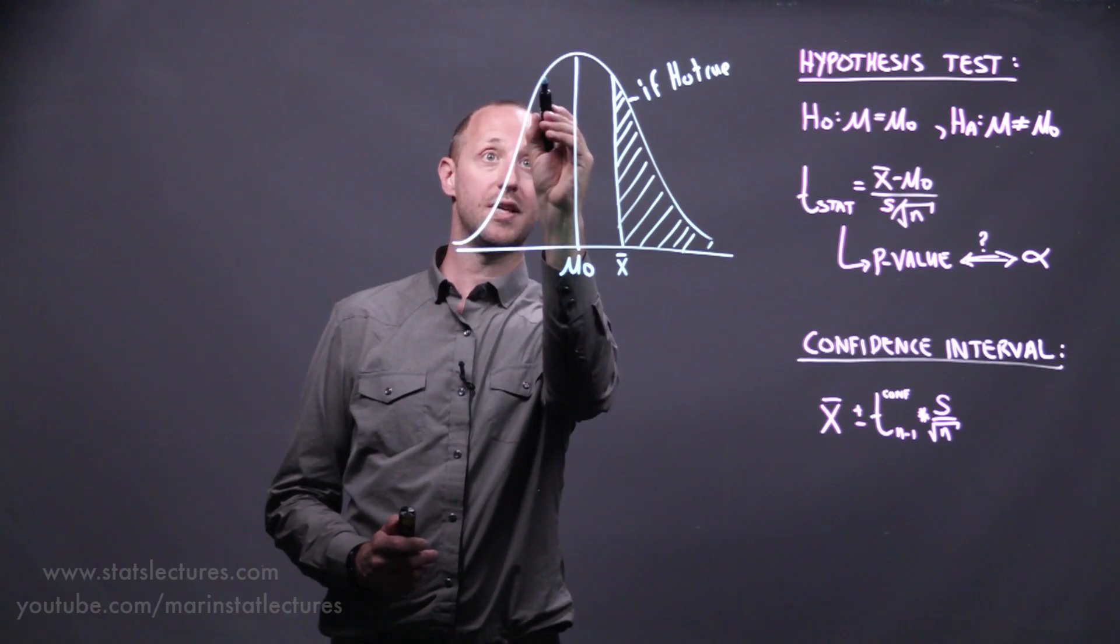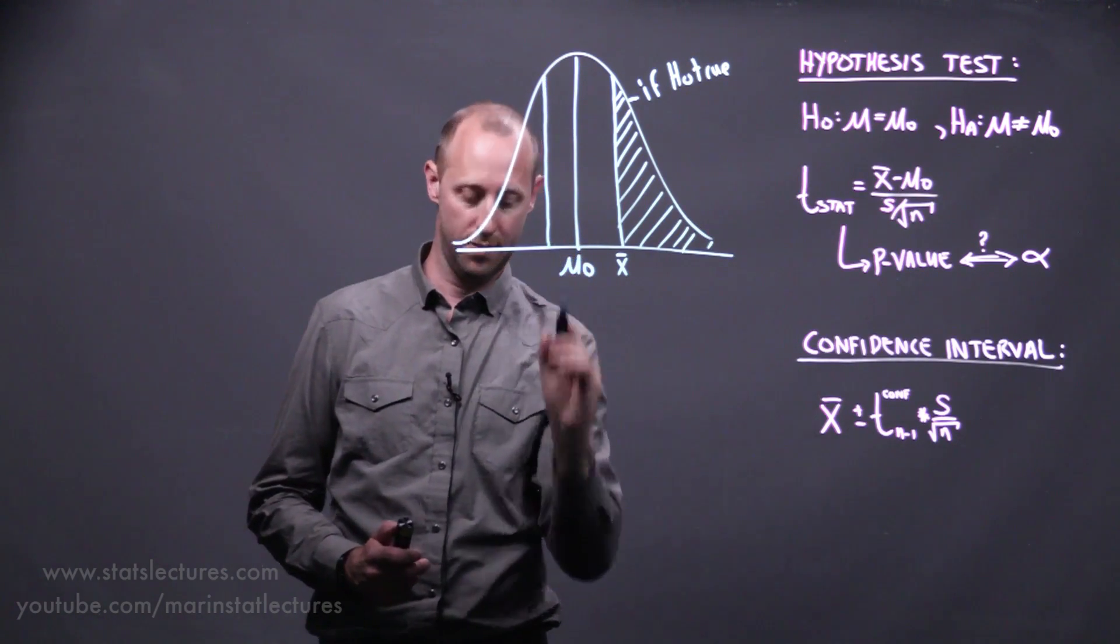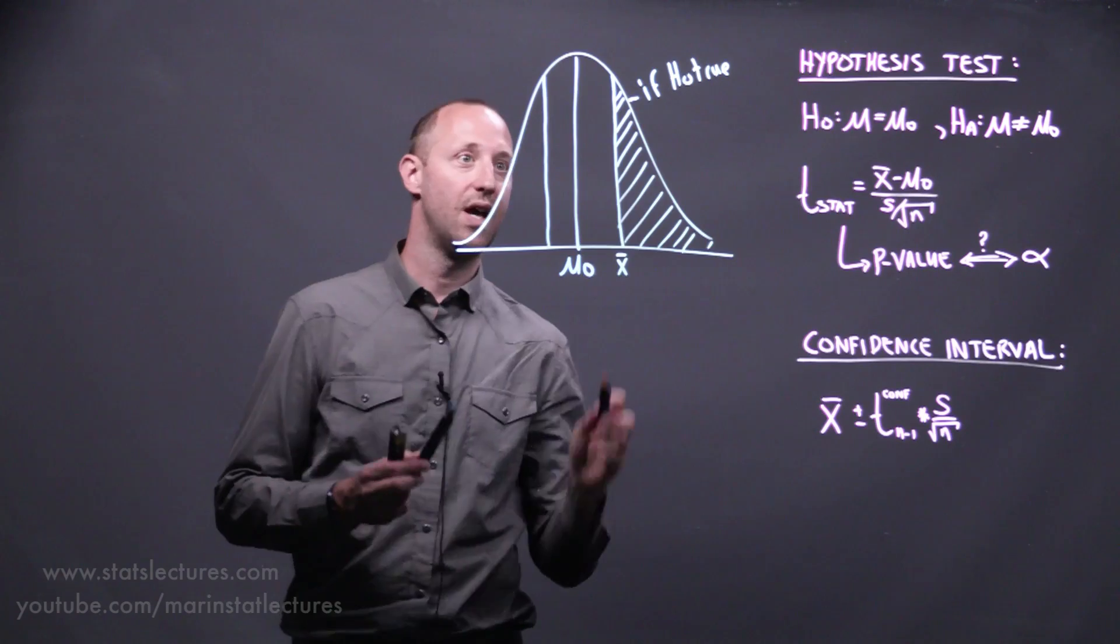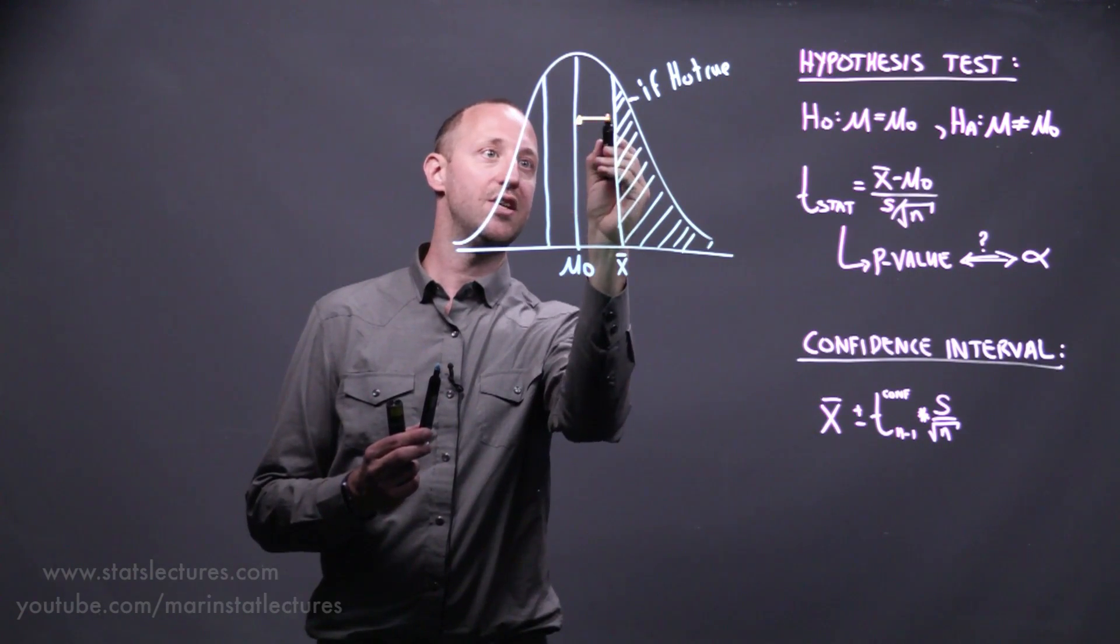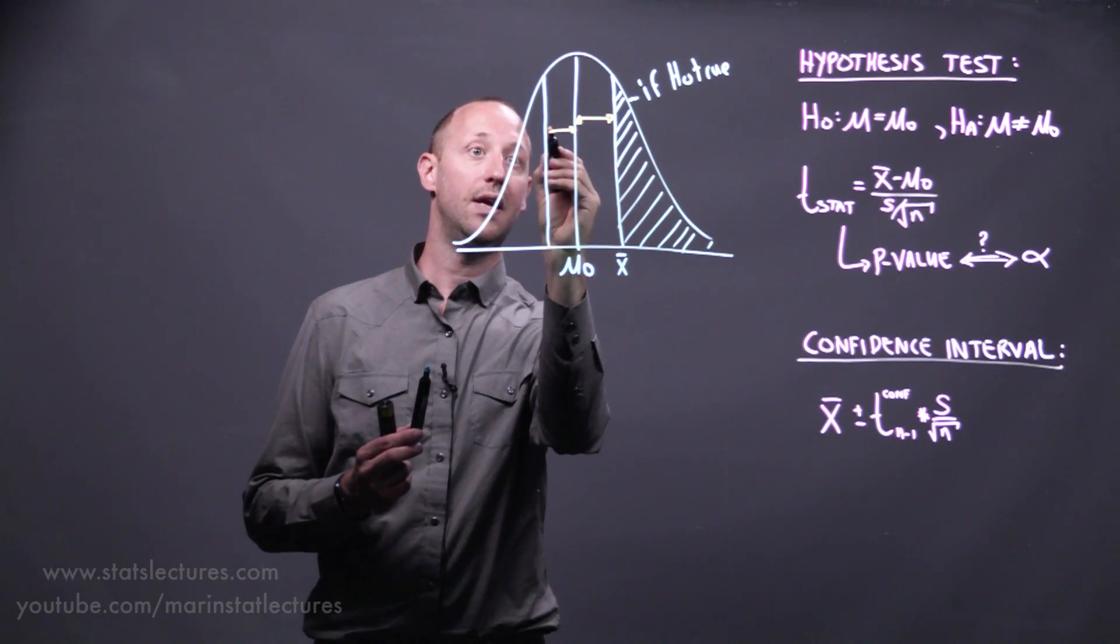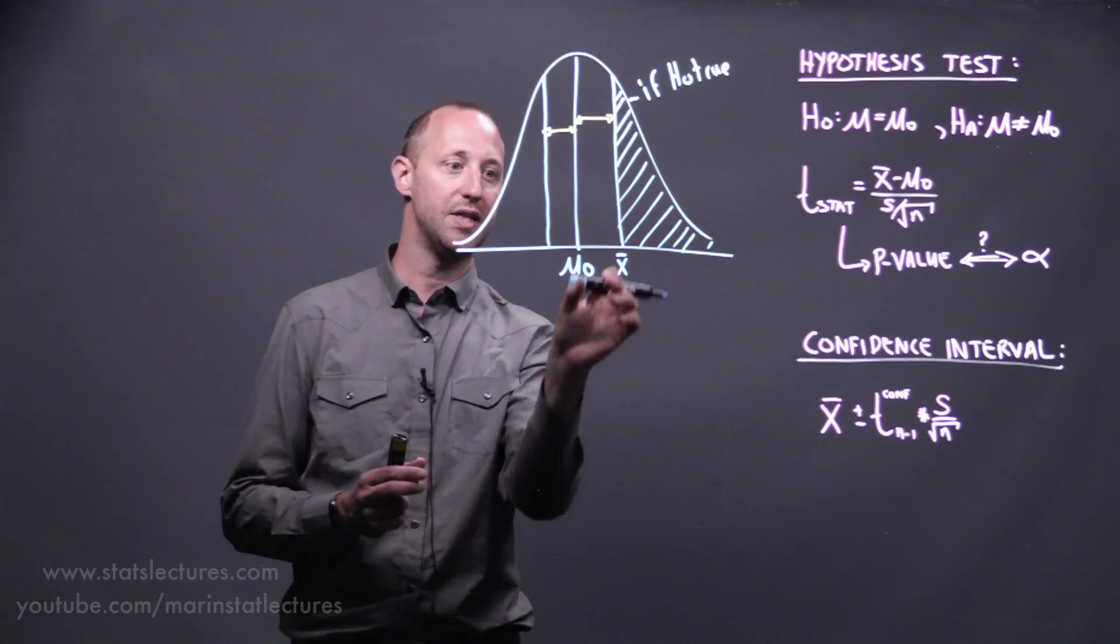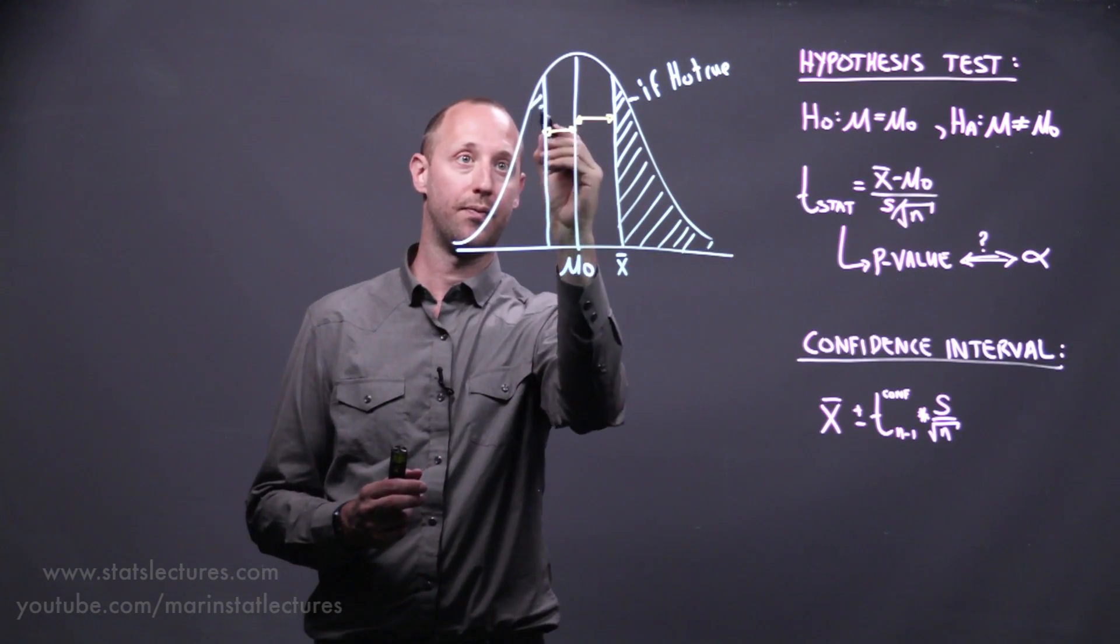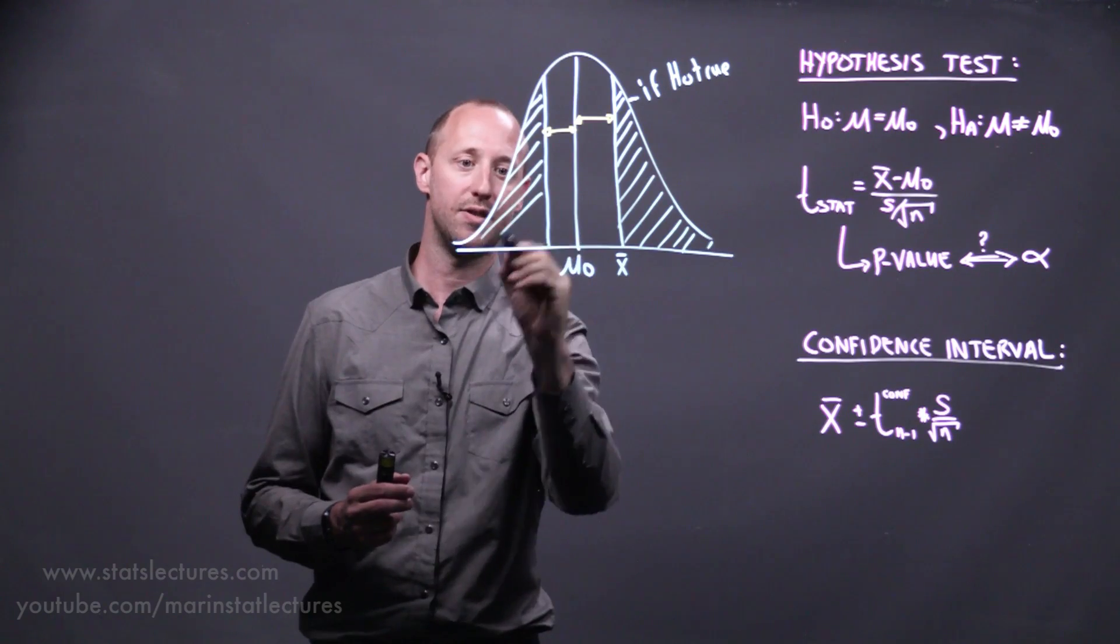In the case of doing a two-sided hypothesis test, we're looking at the question: how often will we see deviation this large in absolute value? How often are we going to get an estimate this far or further from the hypothesized mean?